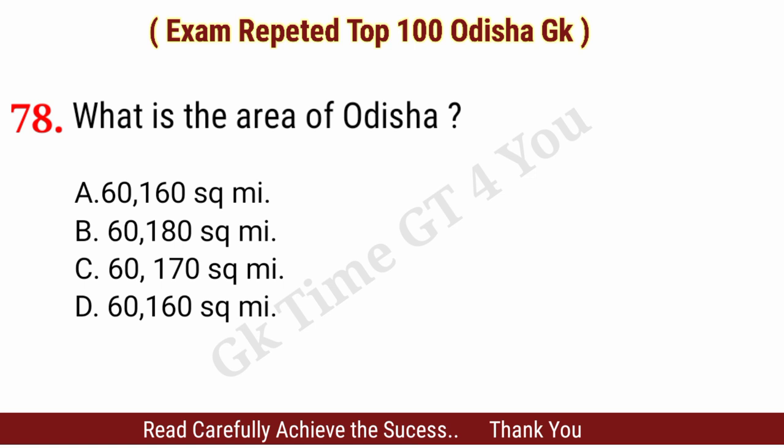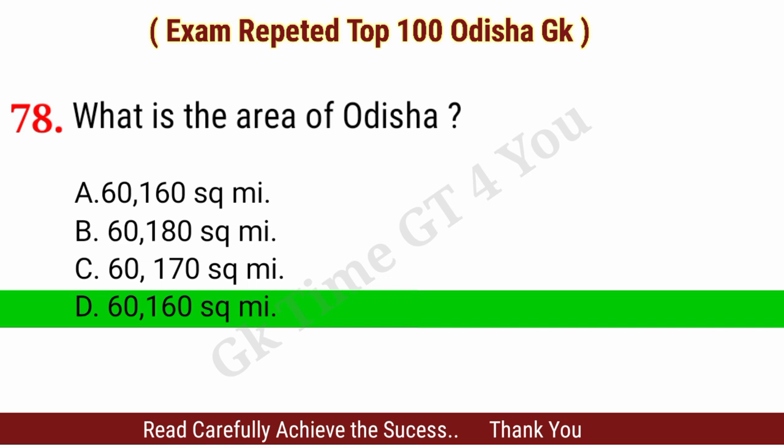Question number seventy-eight: What is the area of Odisha? Right answer, option D: 1,55,707 square kilometers.